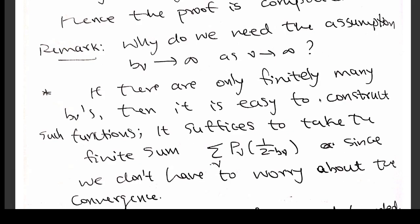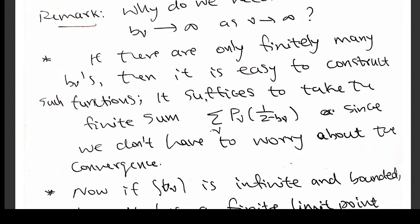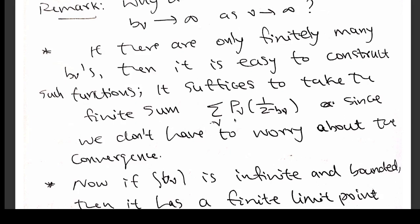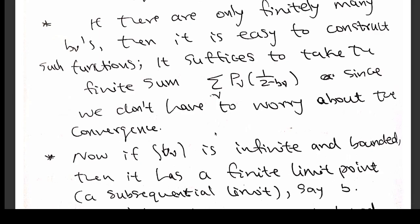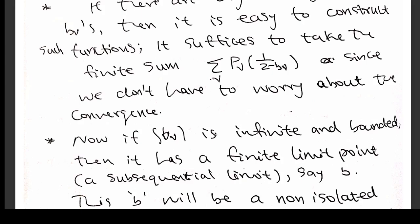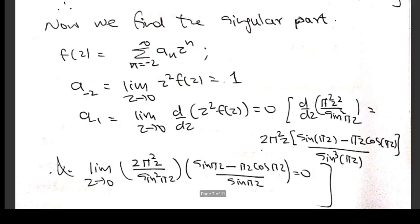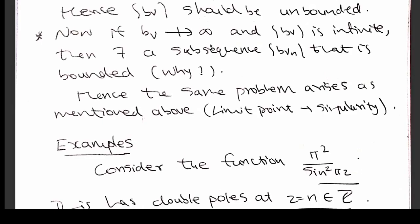Now we should add these remarks. Why do we need the assumption that b_ν tends to infinity? If there are only finitely many b_ν's, then constructing such a function is very easy — you just take the sum of p_ν of 1/(z − b_ν). If there are infinitely many, it cannot be bounded, because bounded means it will have a limit point and that limit point will be a non-isolated singularity. If b_ν does not diverge to infinity, then being an infinite sequence which does not diverge to infinity, you will obtain a sub-sequence that is bounded, which will have a limit point and create a non-isolated singularity. This is why we require b_ν to diverge to infinity.